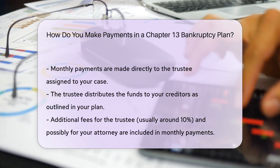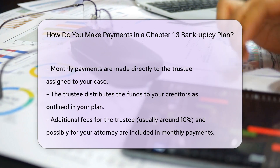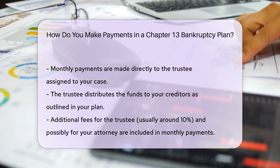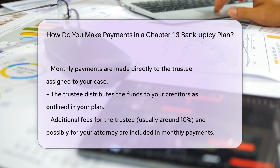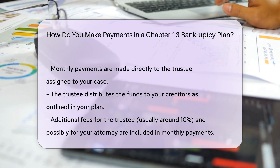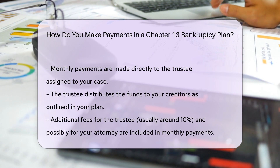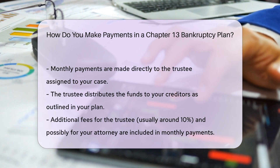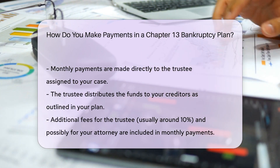How are payments made? You will remit your monthly payments directly to the trustee assigned to your case. The trustee will then disperse these funds to your creditors according to the plan.